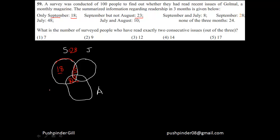Now he's asking: what is the number of surveyed people who have read exactly two consecutive issues? So we just have to find these intersection areas and then we'll be able to solve the question. It also says July is equal to 48. Now that won't help me that much because I have to find specific intersections, so let me read the next clue.